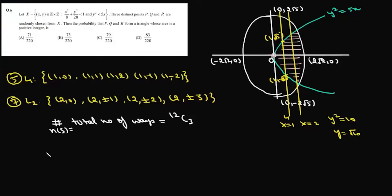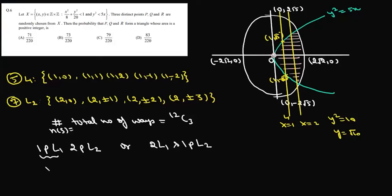For the favorable probability, they form a triangle if we choose one point from L1 and two points from L2, or two points from L1 and one point from L2. For the first case, one point from L1 can be chosen in 5C1 ways. We then select two points from L2 such that the area of the triangle is an integer. The seven points on L2 are (2,3), (2,2), (2,1), (2,0), (2,-1), (2,-2), (2,-3).